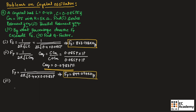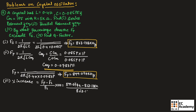Next, we need to find the percentage increase in parallel resonant frequency with respect to series resonant frequency. The percentage increase equals parallel resonant frequency minus series resonant frequency, divided by series resonant frequency, multiplied by 100. That is 899.074 kilohertz minus 863.138 kilohertz divided by 863.138 kilohertz multiplied by 100, giving a percentage increase of 4.163 percent.